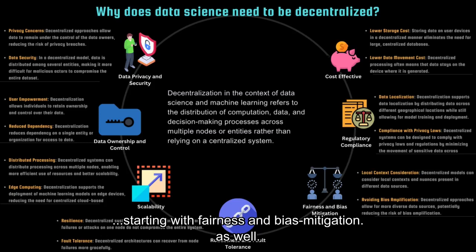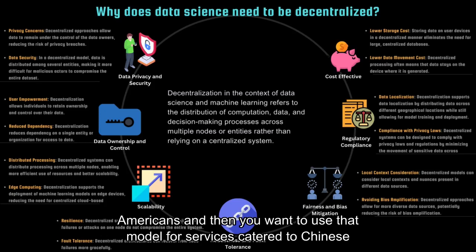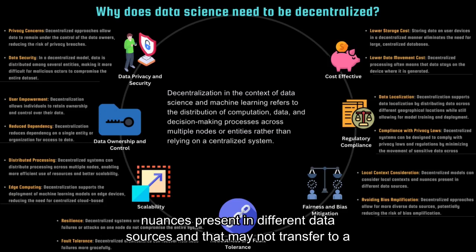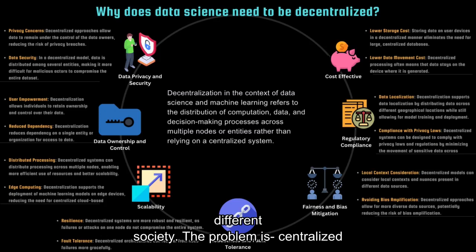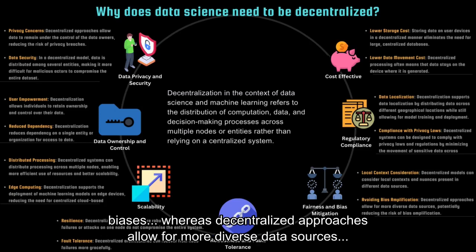Starting with fairness and bias mitigation. Say you are training a model with data collected from North Americans, and then you want to use that model for services catered to Chinese people or Indians. There are local contexts and nuances present in different data sources that may not transfer to a different society. The problem is centralized models trained on biased data sets may unintentionally amplify existing biases. Whereas decentralized approaches allow for more diverse data sources, potentially reducing the risk of bias amplification.